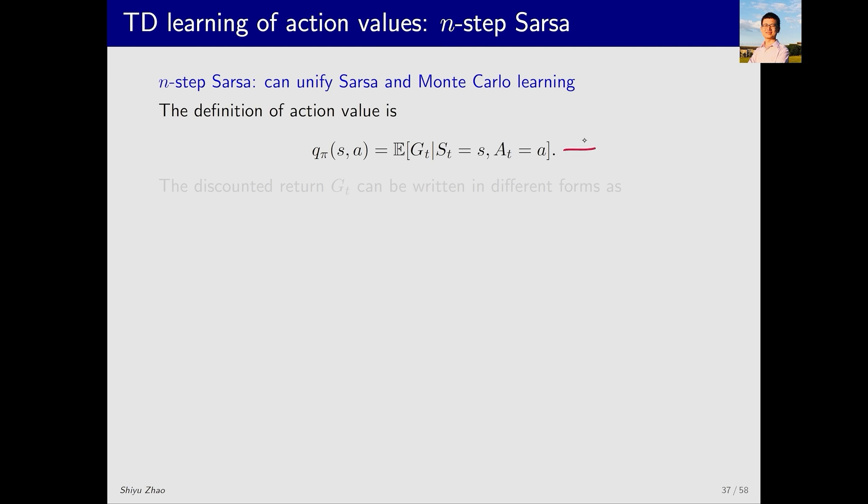First, let's review the basic definition of action value. Starting from state S and taking action A, the action value equals the expected return along any trajectory. The way we express this return is crucial.